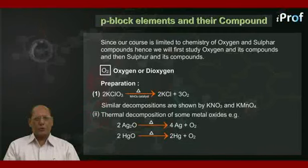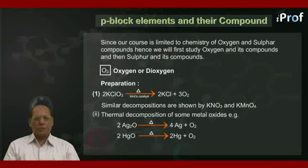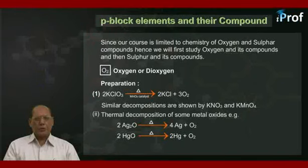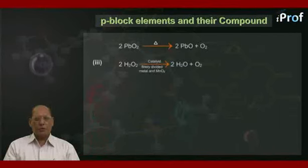Similar decompositions are shown by KNO3 and KMnO4. Method 2 is thermal decomposition of some metal oxides: 2Hg2O gives 4Hg plus O2; 2HgO gives 2Hg plus O2; and 2PbO2 gives 2PbO plus O2.